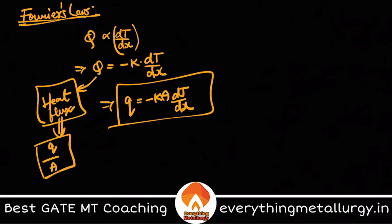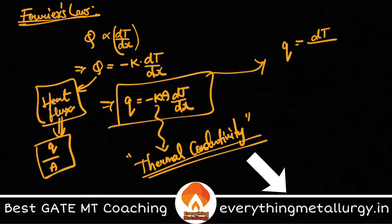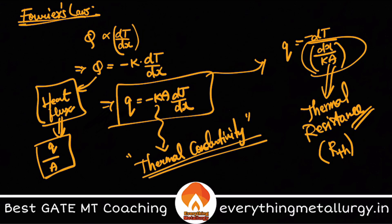The negative sign exists because temperature always decreases in the direction of heat flow — temperature goes from higher to lower — so the negative sign accounts for that. Here, k is thermal conductivity. You can rearrange the equation to express thermal resistance R_thermal as dT / (k·A), analogous to electrical resistance.